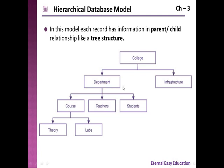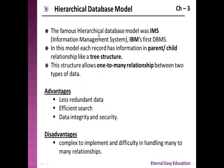The famous hierarchical database model was IMS — IBM's first DBMS. In this model, each record has information in a parent-child relationship like a tree structure. This structure allows a one-to-many relationship between two types of data. The advantages are: less redundant data, meaning less duplicate data; efficient search, meaning data can be searched efficiently; and data integrity and security.